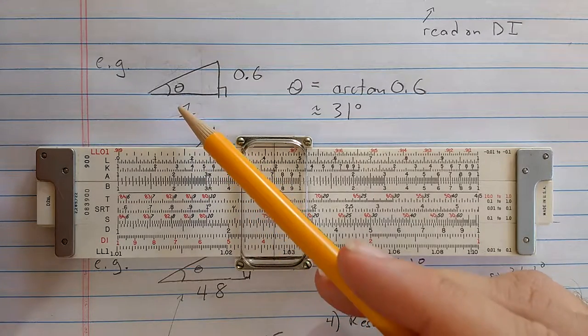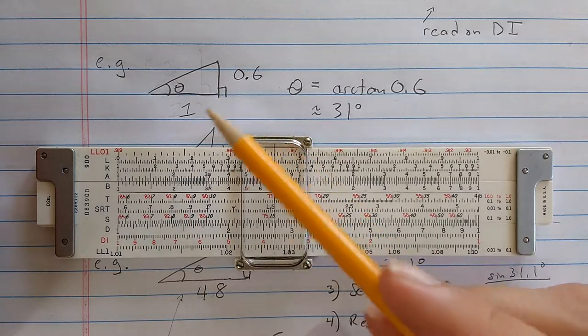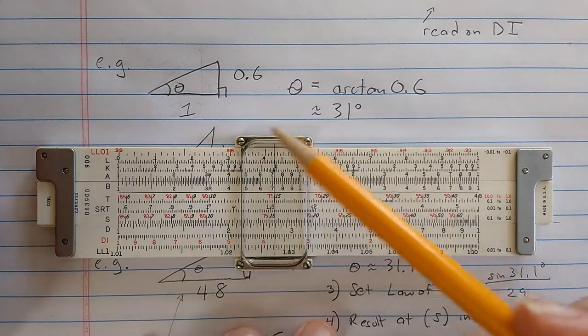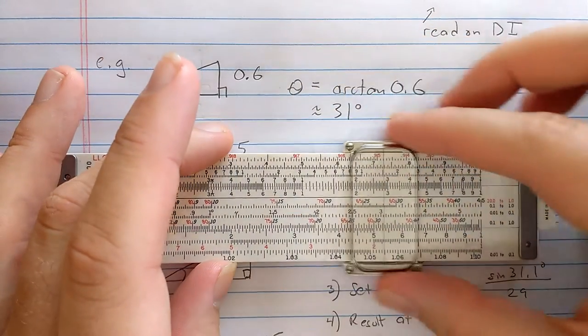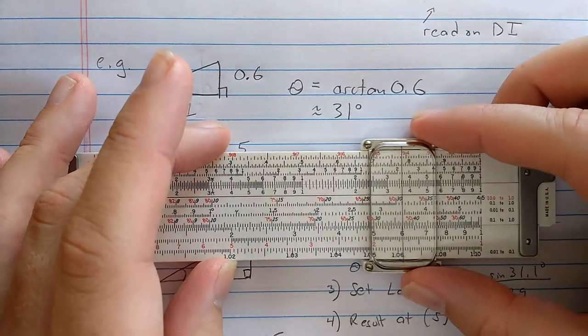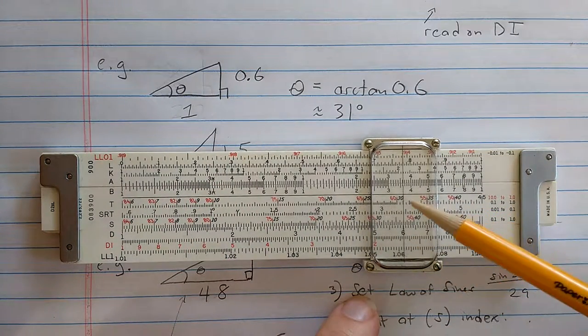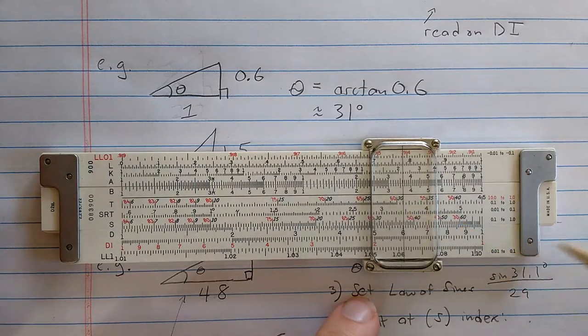So say I have this triangle, and I want to find angle theta here. It's a right triangle, so tangent of theta is 0.6. So theta should be arctangent of 0.6. So if I find 0.6 on the D scale, then on the tangent scale it reads the arctangent. So there's 31 degrees.